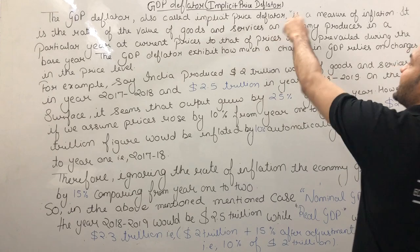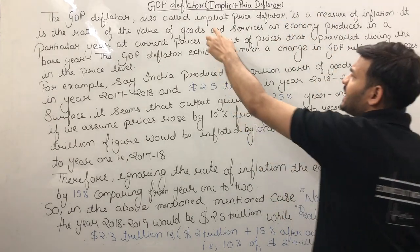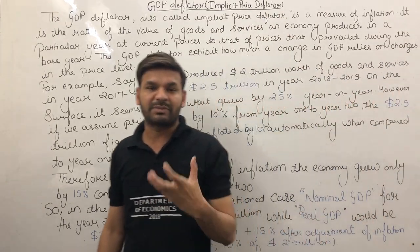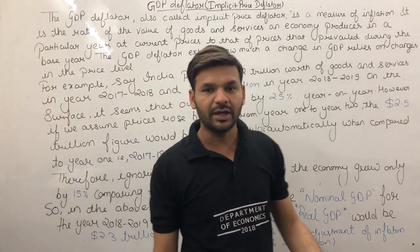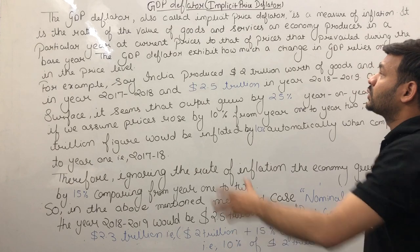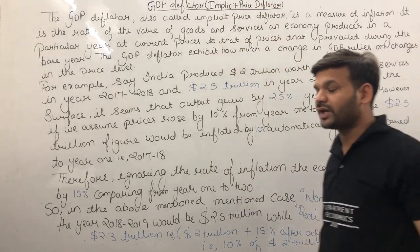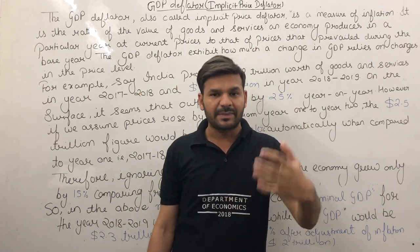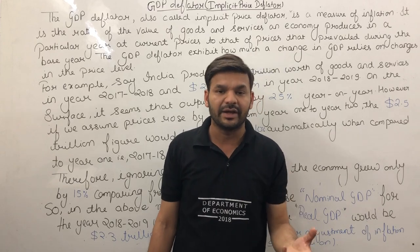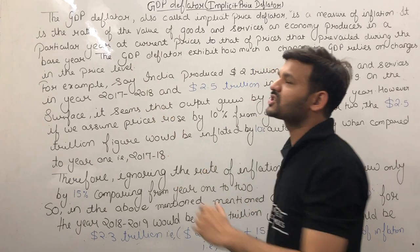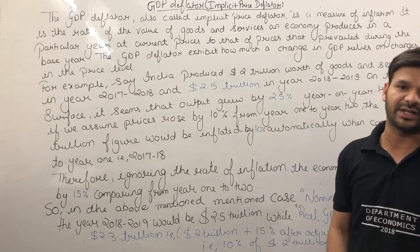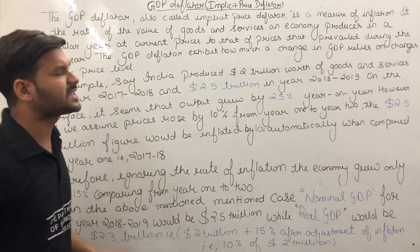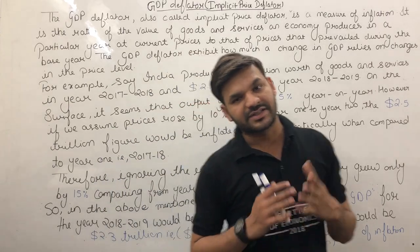GDP Deflator is also called the Implicit Price Deflator. The word 'implicit' means something that is implied or proven indirectly. It is called Implicit Price Deflator because, in order to measure inflation, we have other tools like WPI and CPI, but comparatively, GDP Deflator is a more comprehensive tool to calculate inflation.